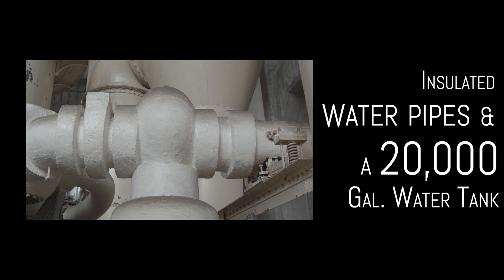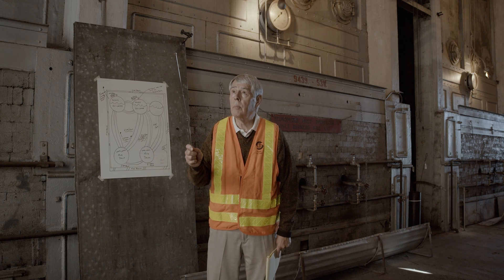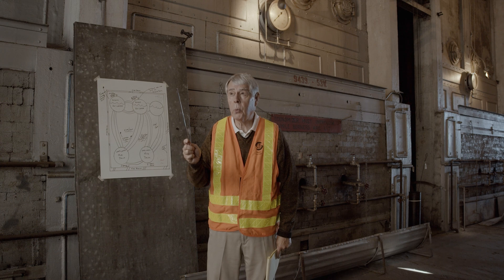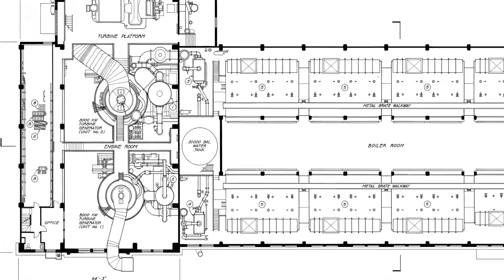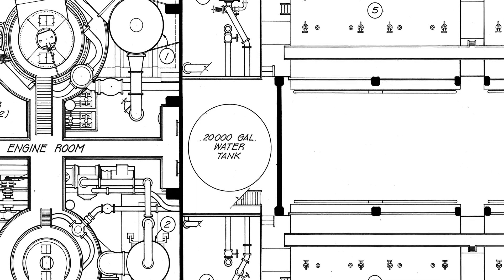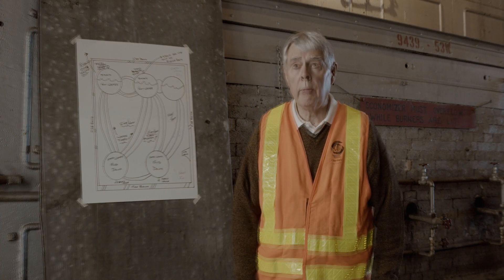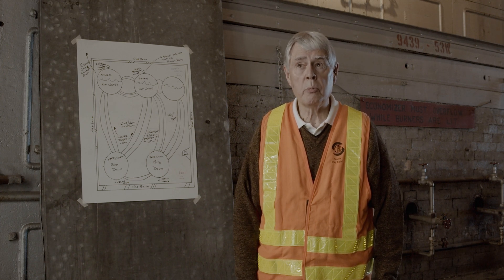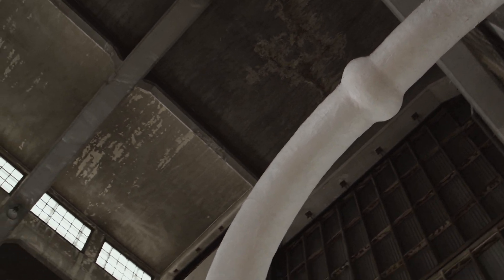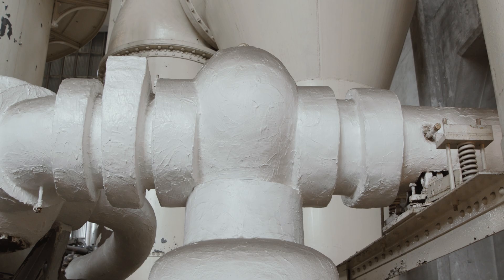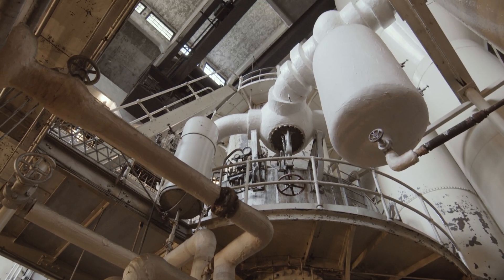Above our heads there are some thick concrete pipes and pilings. They hold a 20,000-gallon water tank that is the feed water for all the boilers. That tank is filled from the city water supply. The steam produced in these boilers flows out to the engine room in those large, white, heavily insulated pipes to the engine room for use there.